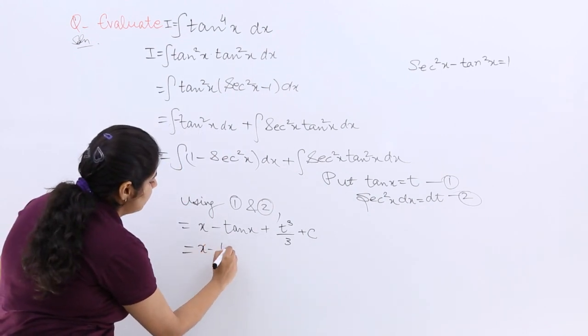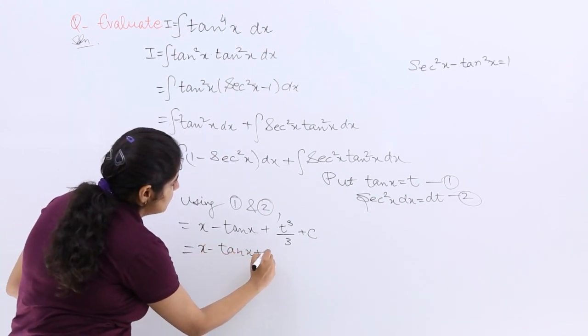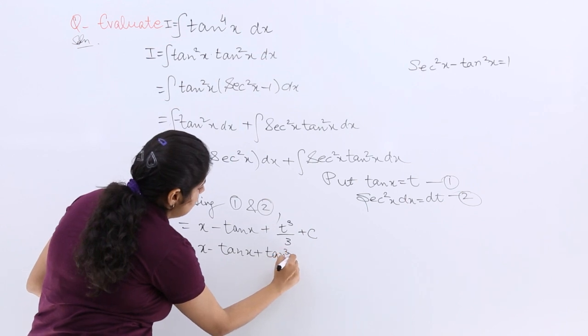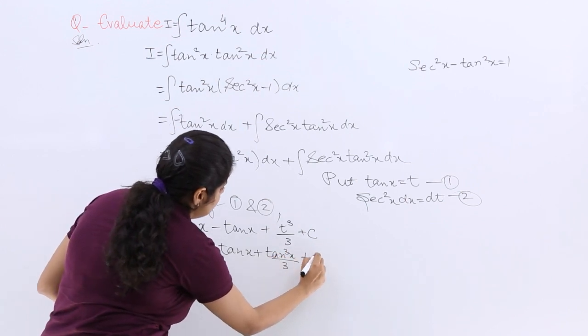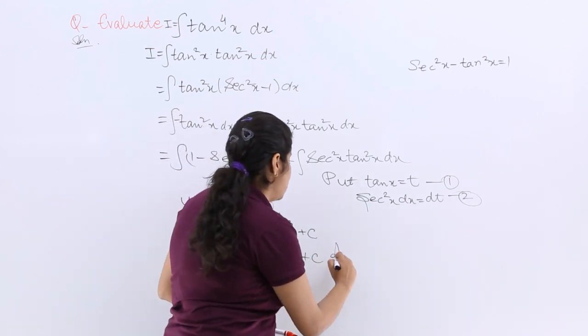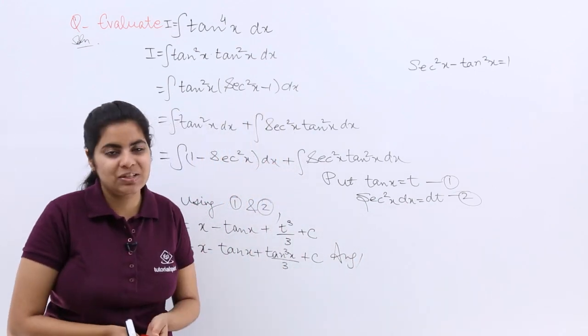So my answer is x minus tan x plus tan cube x by 3 plus c and that is my answer to this question.